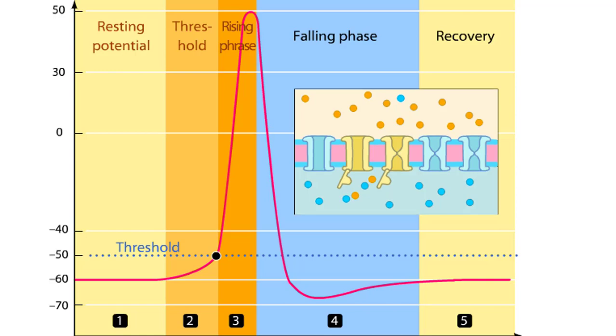If the depolarization reaches the threshold potential, additional voltage-gated sodium channels open. As positive sodium ions rush into the cell, the voltage across the membrane rapidly reverses and reaches its most positive value.